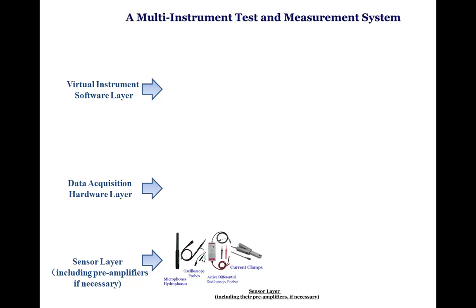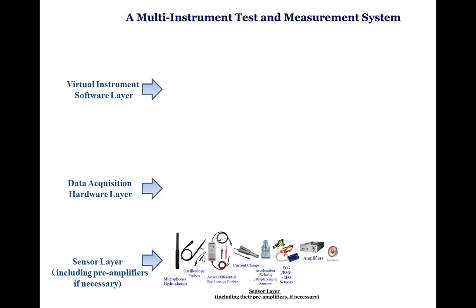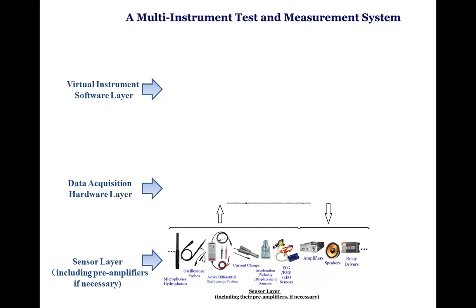A current clamp can be used to measure electronic or electrical current signals. An acceleration, velocity, or displacement sensor can be used to sense vibration. An ECG sensor can be used to sense the electrical activity of the heart. The sensor layer can also contain output devices or actuators, such as amplifiers, speakers, and relay drivers.